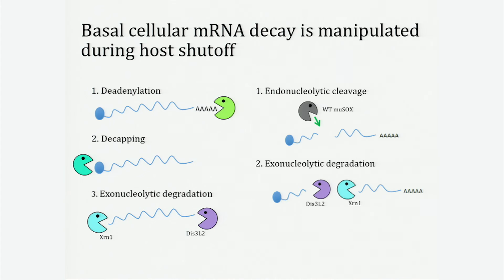Now the mRNA is susceptible to very rapid degradation by cellular exonucleases like XRN1 and DIS3L2. Host shutoff is so effective because it's able to bypass this key rate-limiting step of deadenylation by making an internal cleavage in the mRNA. The two resulting products are then very rapidly degraded by those same cellular exonucleases, XRN1 and DIS3L2. This obviously creates widespread loss of mRNAs, and we began to wonder: is the cell able to sense this loss and respond in a different arm of its gene expression pathway?